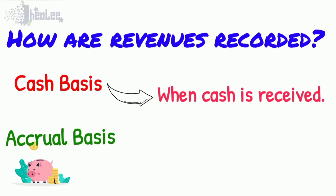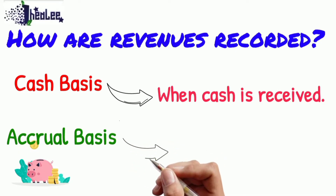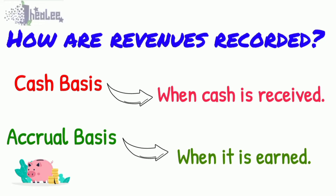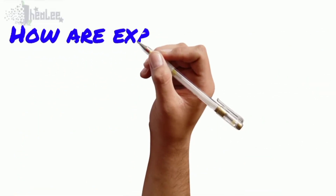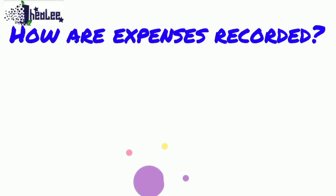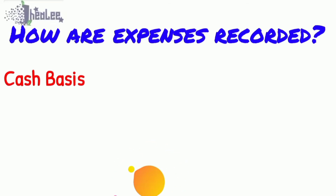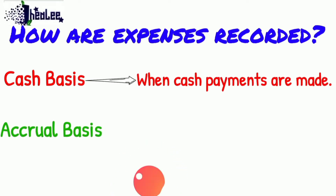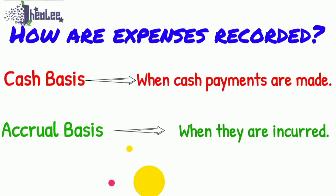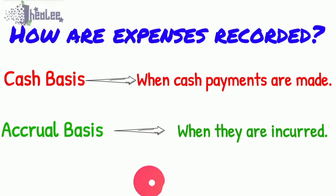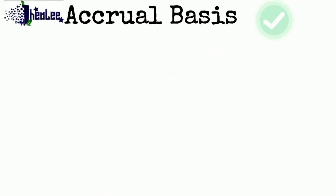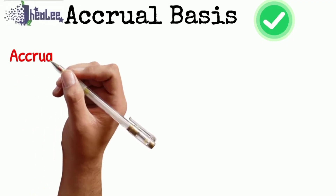For the cash basis, revenues are recorded when cash is received, while for the accrual basis, revenues are recorded when they are earned. Now let's look at how expenses are recorded under each type. Under the cash basis, expenses are recorded when cash payments are made, while for the accrual basis, expenses are recorded when they are incurred.